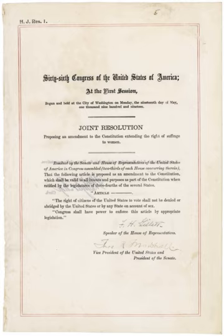33 amendments to the United States Constitution have been approved by the Congress and sent to the states for ratification. Twenty-seven of these amendments have been ratified and are now part of the Constitution. The first ten amendments were adopted and ratified simultaneously and are known collectively as the Bill of Rights. Six amendments adopted by Congress and sent to the states have not been ratified by the required number of states and are not part of the Constitution.